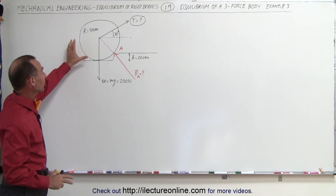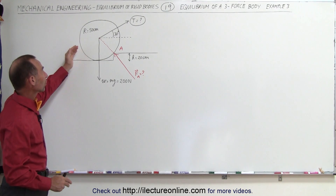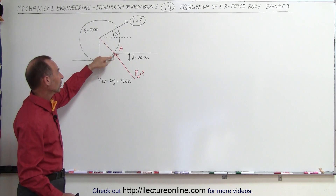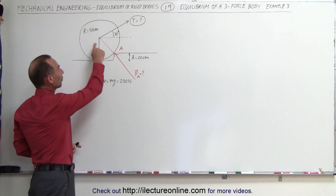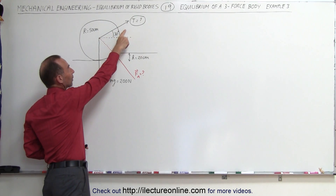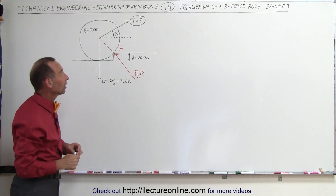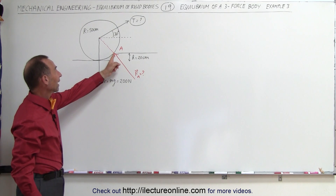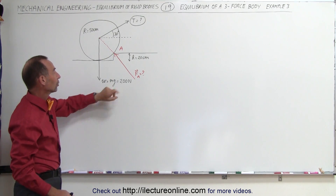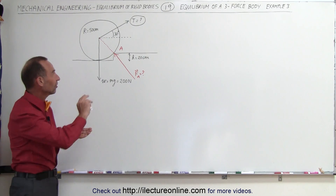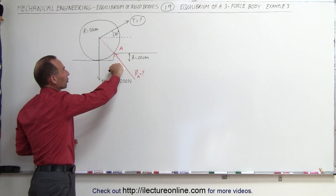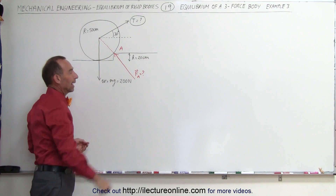We know this is an equilibrium. We have a wheel that we're trying to pull across a curb. There's a 20 centimeter increase in height there, and the radius of the wheel is 50 centimeters. We're pulling with a tension that we're trying to find, and we also want to find the action at A. We do know that the weight of the wheel is 200 Newtons. So how much tension does it take to get the wheel to come up on top of this curb, and what will be the action at A?